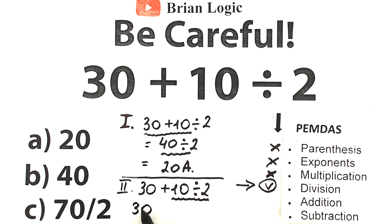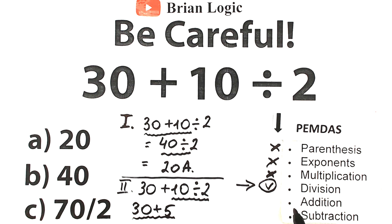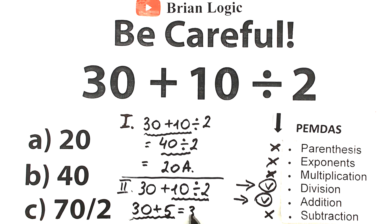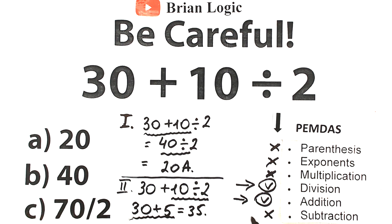So we have 30 plus 10 divided by 2, and 10 divided by 2 equals 5. Addition is our last step, so we complete the division step first, and now we go to the addition step. This is very basic addition: 30 plus 5 equals 35. The really important note here is that division always comes before addition — every time you should divide first, then add. This is a really important moment.